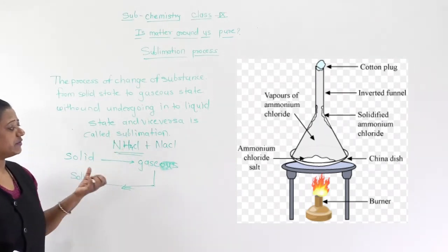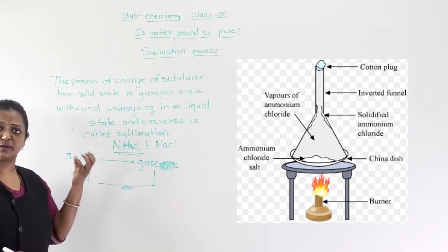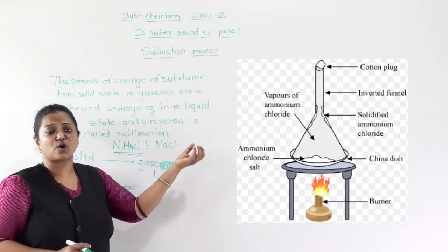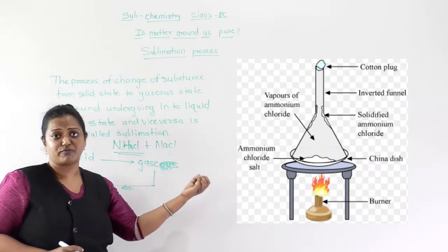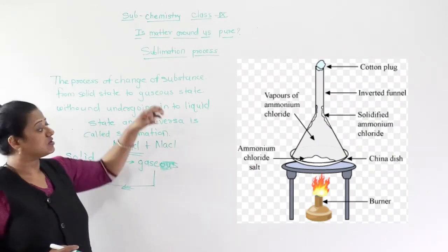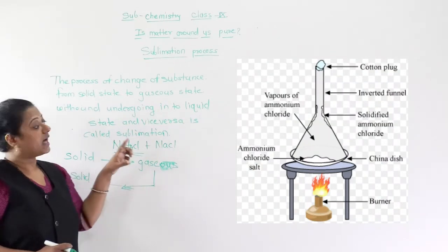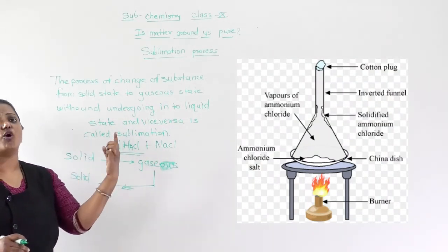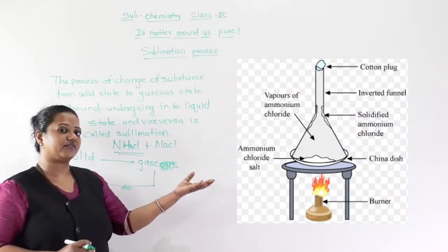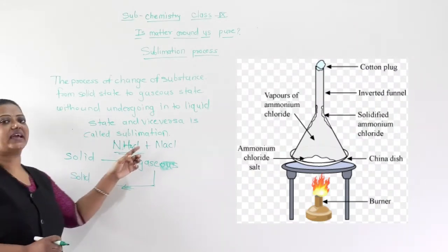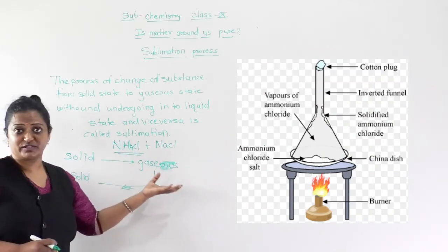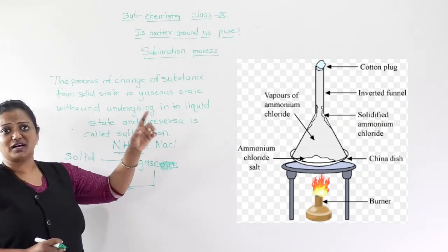As heat is provided, the NH4Cl, which undergoes sublimation, converts into vapor and rises up. These fumes get accumulated on the walls and stem of the inverted funnel, and cannot escape because the stem is sealed with the cotton plug. What remains in the china dish is NaCl — sodium chloride stays at the base, while the NH4Cl vapors collect on the walls and stem of the funnel.